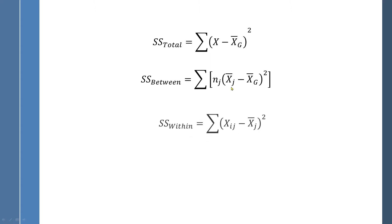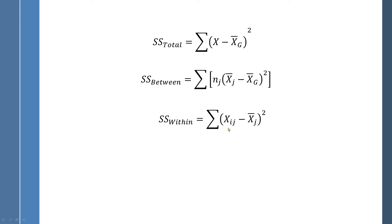The third formula is the sum of squares within, where you take every individual in every j-th group, subtract the mean of that j-th group from the individual score, take that deviation score squared, and add it up. You're taking every observation within a specified group, subtracting that group's mean, squaring it, then moving to the next group. But there's a shortcut: sum of squares total minus between equals within.